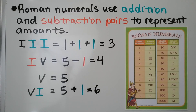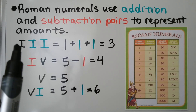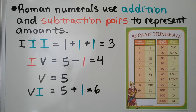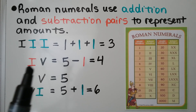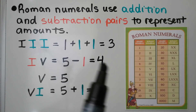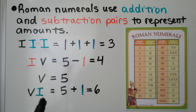Roman numerals use addition and subtraction pairs to represent amounts. The letter I equals 1, so III means 1 plus 1 plus 1, which equals 3. An I then a V is 1 then 5, and that means 5 minus 1, which equals 4. The V equals 5, and a V followed by an I to the right is 5 plus 1, which is 6.